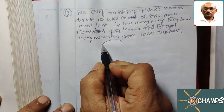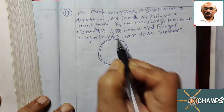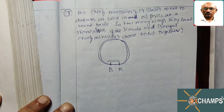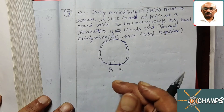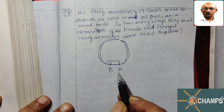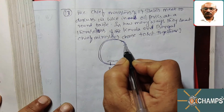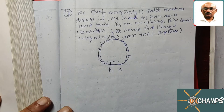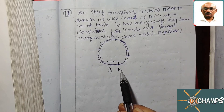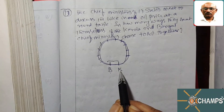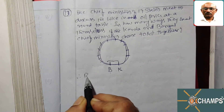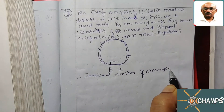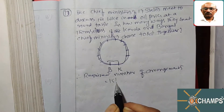Seventeen states — so it is a case of circular permutation. Let us take the Bengal and Kerala CMs as one object. So from seventeen, these two chief ministers are separated, leaving fifteen places. The remaining fifteen CMs can sit in 15! ways. Also, the Bengal and Kerala chief ministers can interchange their places. Therefore, the required number of arrangements is equal to 15! × 2.